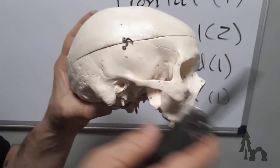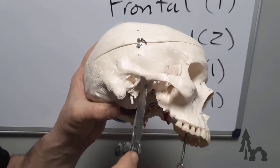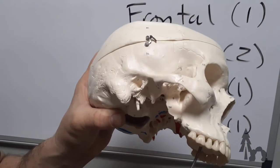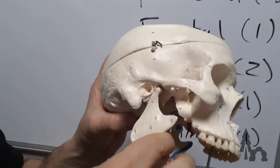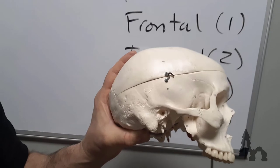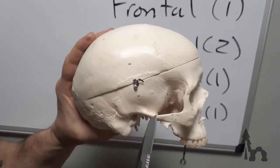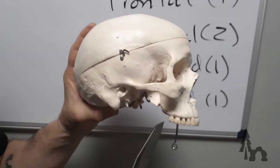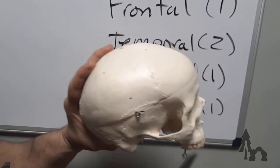Just anterior or toward the front of the face, you're going to find the mandibular fossa. That's where the jawbone would articulate. We'll go over the parts of the jaw in another video. Then you've got this little bridge of bone that projects forward. This is the zygomatic process of the temporal bone.